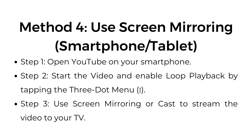Method four: use screen mirroring on a smartphone or tablet. Step one, open YouTube on your smartphone. Step two, start the video and enable loop playback by tapping the three-dot menu. Step three, use screen mirroring or cast to stream the video to your TV.